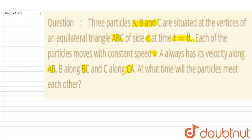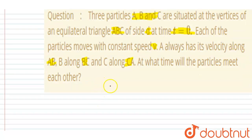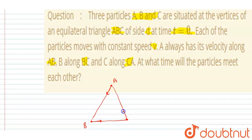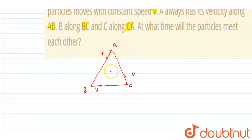If I draw the diagram, this is the triangle. Particle A is moving toward B, particle B is moving toward C, and particle C is moving toward A. A particle is moving along AB line, B particle along BC line, and C along CA line, and the velocities are all v.